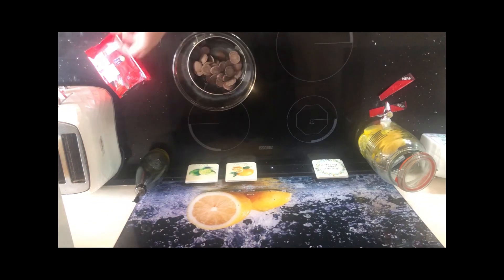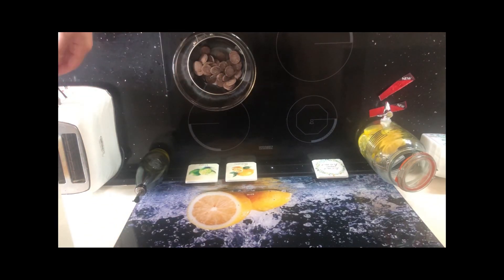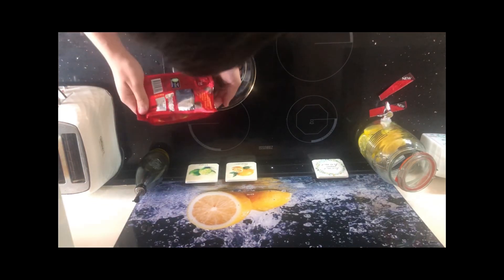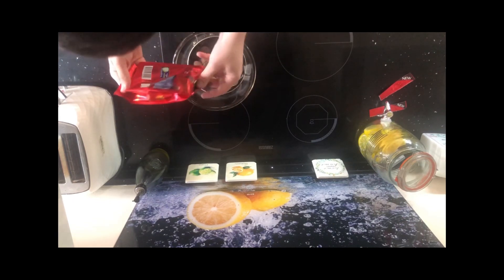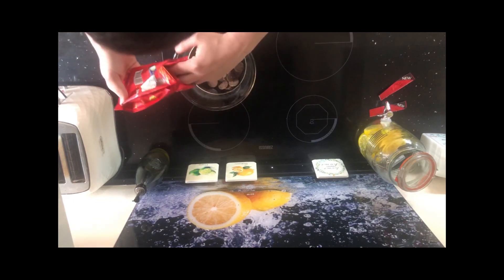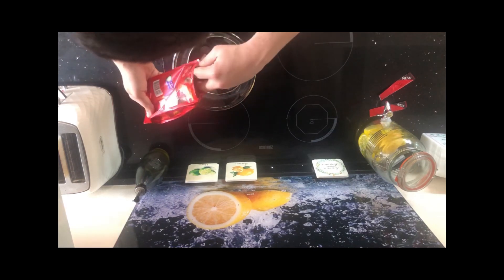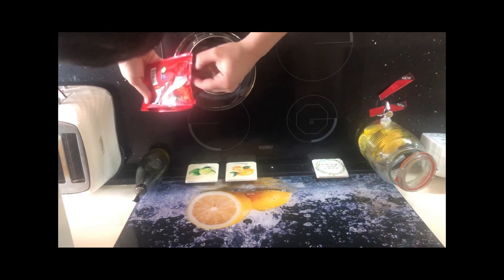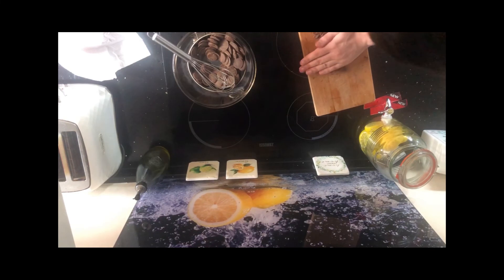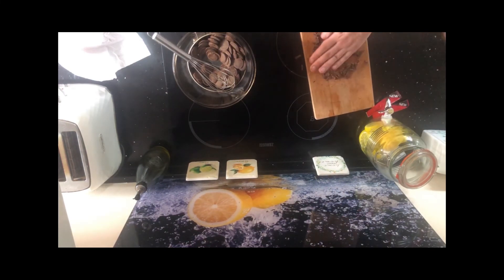To temper your chocolate you're going to need 8 ounces of dark chocolate. You're going to want to put aside 2 ounces of the chocolate and finely chop it. Take the remaining 6 ounces and place in a bowl over a low heat, making sure that the chocolate never exceeds 50 degrees.